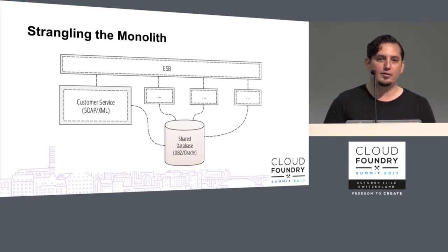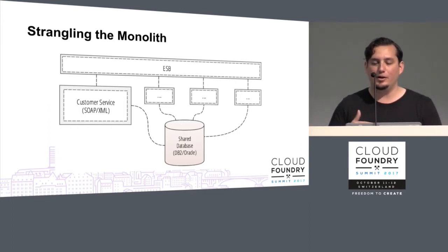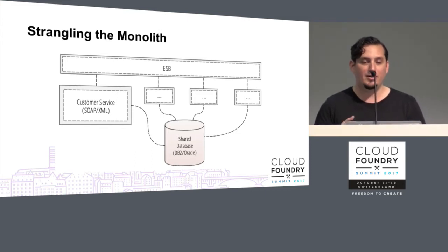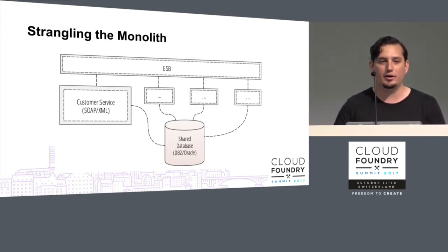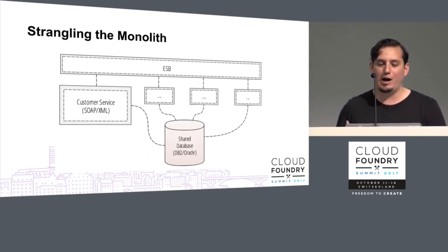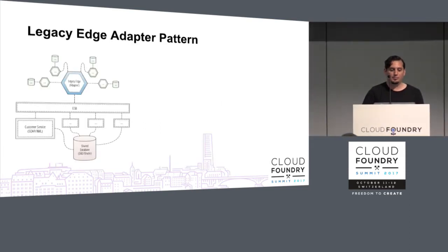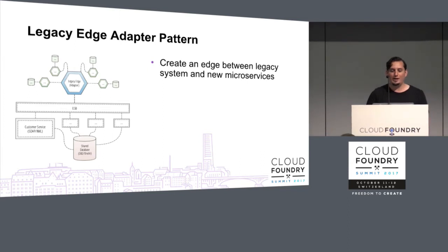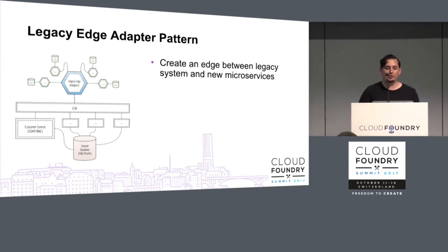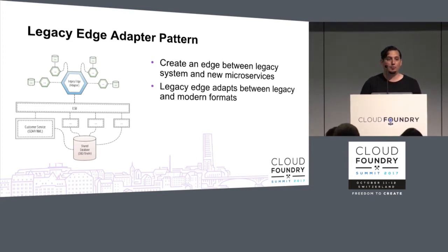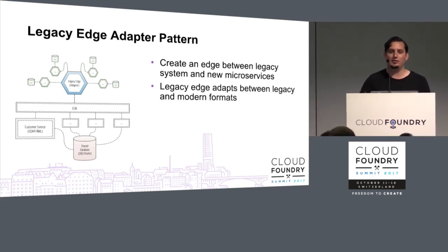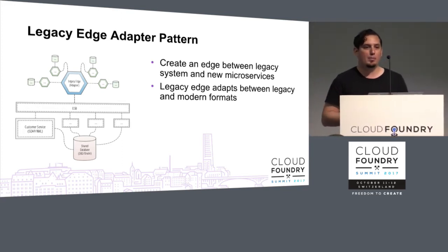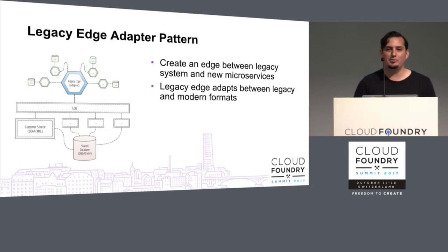Not all architectures are monoliths. Here's an example of an SOA migrating to microservices. We have an ESB — which is usually evil — but in this case it helps because it gives us that indirection layer, that place where we can seed the strangler vine and start to gain control over extracting data from the large shared database. With this pattern, you can create an edge between your legacy system and your new microservices. That legacy edge can do useful things like adapt formats — translating between legacy formats and modern formats using an API gateway.